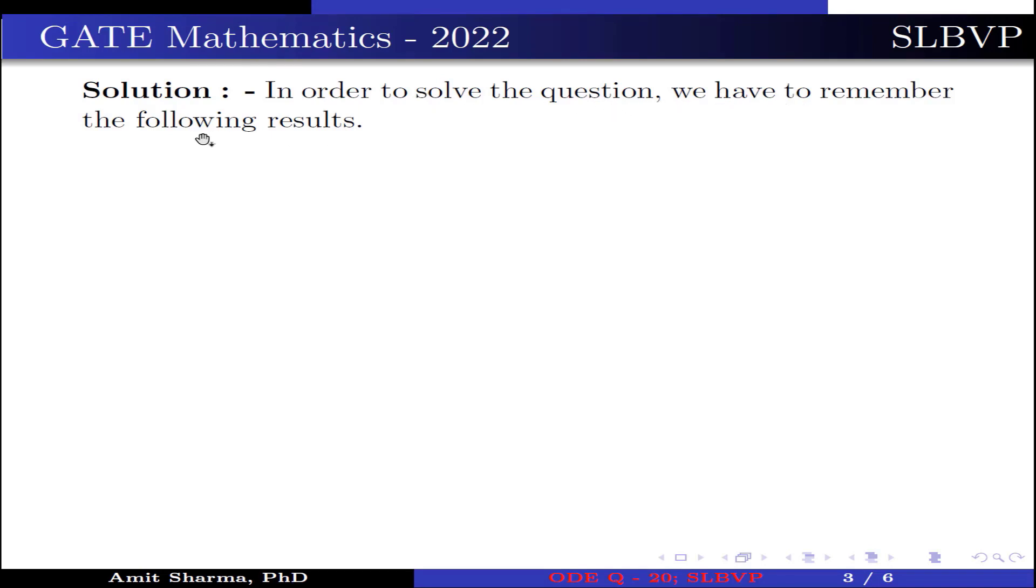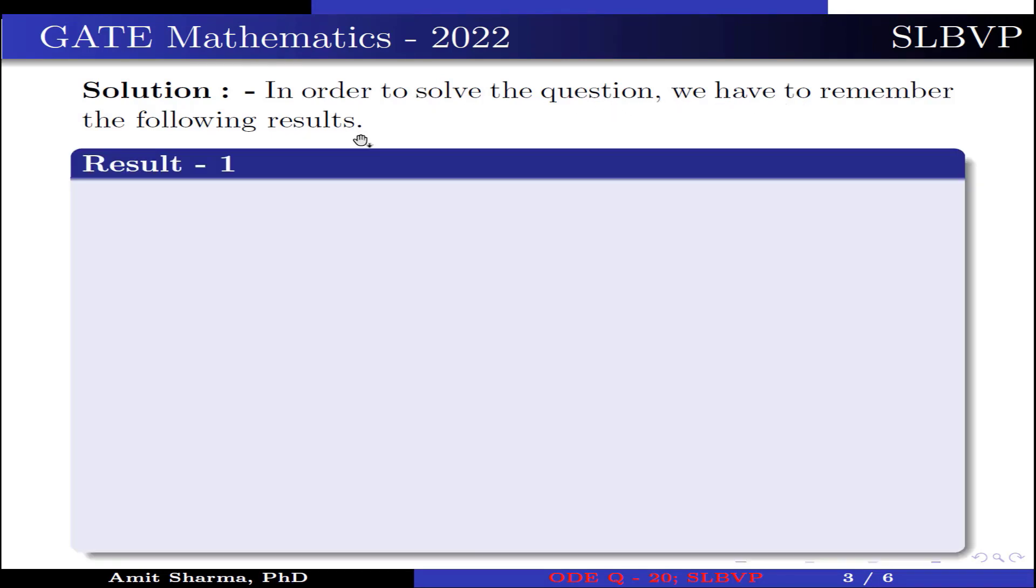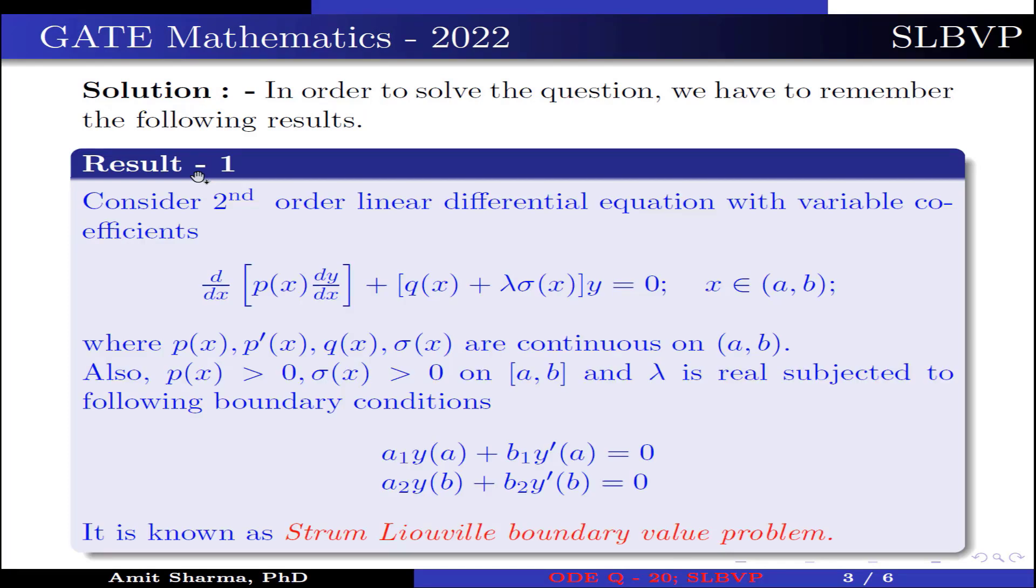In order to solve the equation, we have to remember the following results. Result 1: Consider a second order linear differential equation with variable coefficients: d/dx[p(x)·dy/dx] + [q(x) + λσ(x)]y = 0, where x ∈ (a,b).